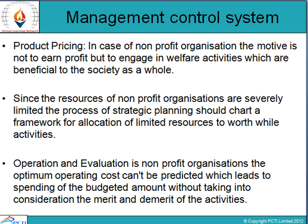When we talk about the management control system for any non-profit organization, they focus on product pricing — in a non-profit organization, the motive is not to earn profit but to engage in activities related to the welfare or benefit of society as a whole. The second area is strategic planning and budget preparation. Since the resources of non-profit organizations are limited, the process of strategic planning should chart for the allocation of limited resources to all worthwhile activities only. The third is operation and evaluation — in most non-profit organizations, the optimum operating cost cannot be predicted, so certain budgeted amounts are spent without taking into consideration the merits or demerits of the activity.